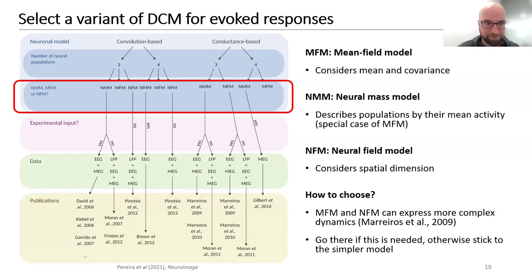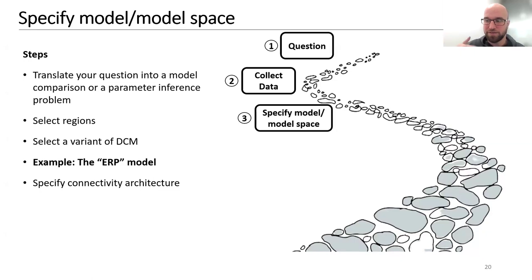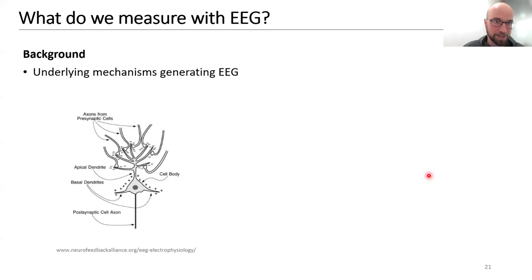I will now walk through the ERP model in a lot more depth. I think it will be useful because many principles also apply to the canonical microcircuit. I'll also highlight where certain assumptions are made, what could be wrong with them, and what you should think about when using these models. As a quick recap, we have to think about what we actually measure with EEG.